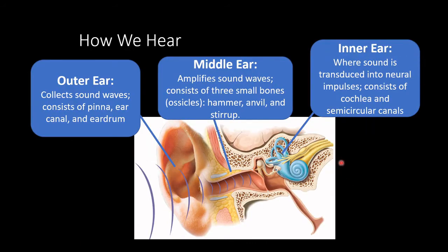So how do we hear? It all begins with our outer ear. The pinna is the fleshy outer portion of your ear that collects sounds. We also have our ear canal, which is still part of the outer ear, and it ends with our eardrum. The pinna collects sound, funnels it into the ear canal, which then causes the eardrum to vibrate.